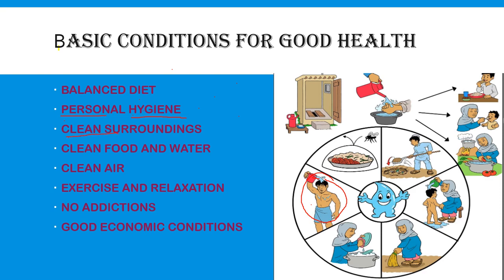Saath ke saath surroundings bhi clean honi chahiye — aas paas cleanliness honi chahiye. This child is taking bath. Here she is washing utensils — bartan saaf kar rahi hai. Yahan par dekho jhaadu laga rahi hai, floor ko clean kar rahi hai. Yahan par dekho jo koi bhi dump hai usko clean kiya ja raha hai. Food is covered with a proper container taki jo fly hai, jo makhi hai woh use infect na kare, contaminate na kare. Toilets proper use karne chahiye. Yahan par soap rakha hua hai, proper water hai. Hand wash proper karna chahiye — there should be proper hand washing. Khana bilkul saaf sutre haathon se khaana chahiye.